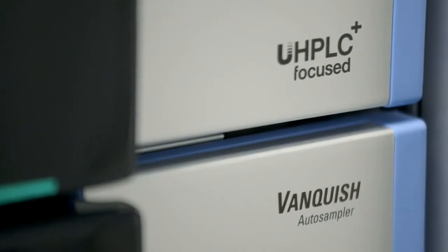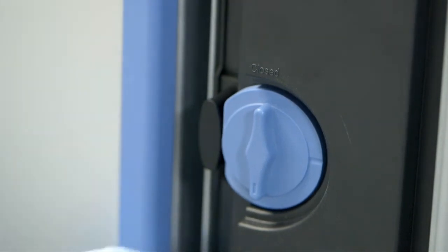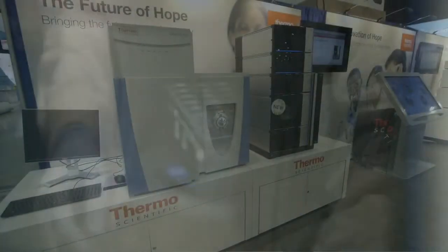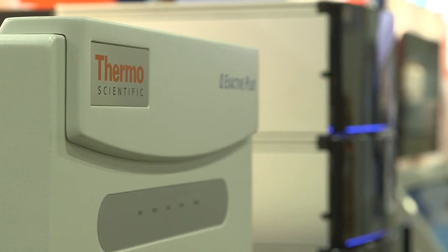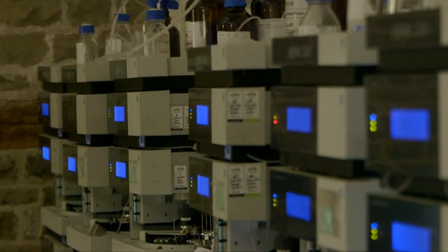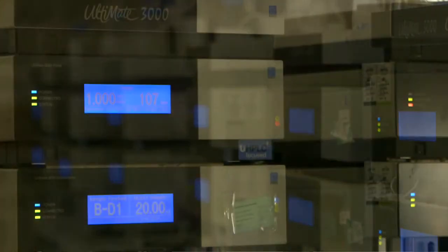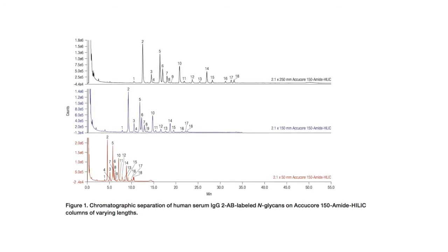For instrumentation, we use the Thermo Scientific Vanquish Horizon UHPLC system with a fluorescence detector, optionally coupled to a Thermo Scientific Q Exactive Plus hybrid quadrupole orbitrap mass spectrometer, with post-derivatization cleanup carried out with online fluorescence detection. Three different columns — 2.1 by 50, 150, and 250 mm — are used to enable separation efficiency or runtime optimization, with total runtimes of 15, 35, and 55 minutes respectively.